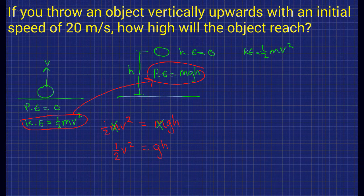What are we trying to find? We're trying to find how high the object will get, which is given by h. To rearrange, all we have to do is divide both sides by g, and we get h equals half v squared over g.